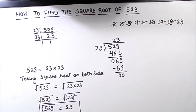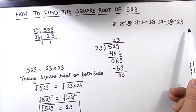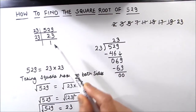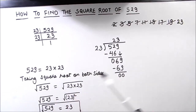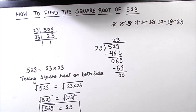This is how, by using the prime factorization method, we can find the square root of any number. For this number we had to list all the prime numbers and use the trial and error method to find the first factor. I hope this video is helpful to you. If you like the video please hit the like button and subscribe to my channel for more math videos. Thanks for watching.